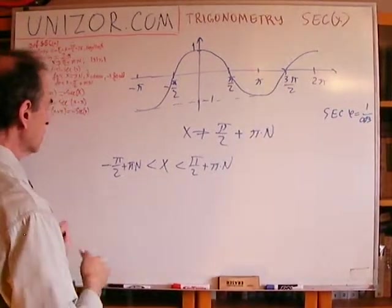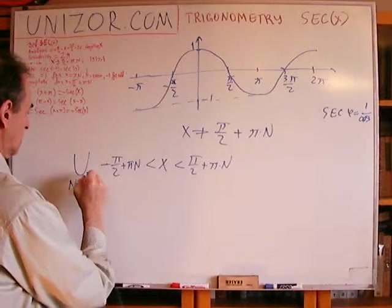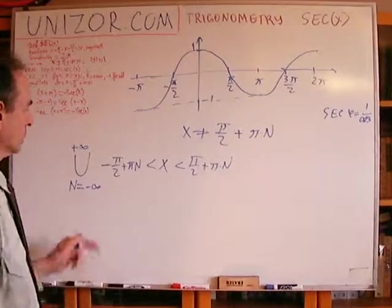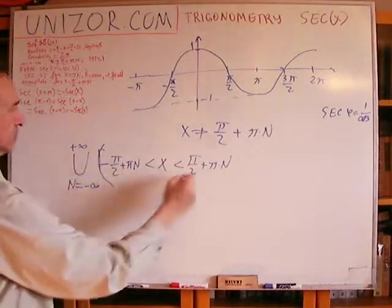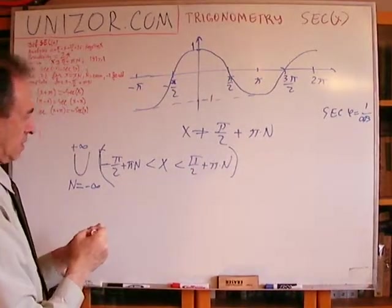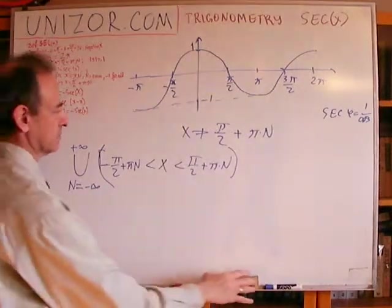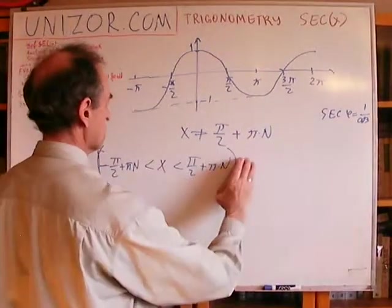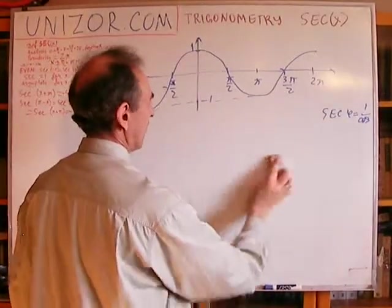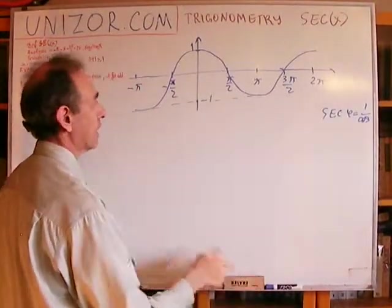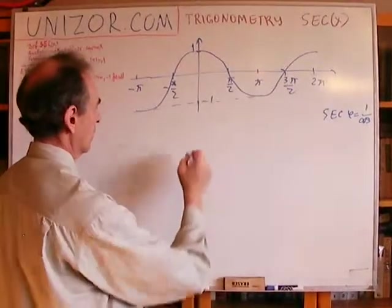So, the union of this for all integer n's of this particular interval. You can basically symbolize it as this. This is domain. This is simpler, obviously. Now, as far as the range, now we have to really investigate how the function grows.